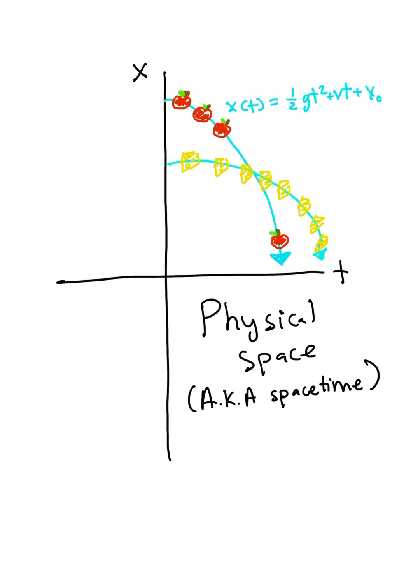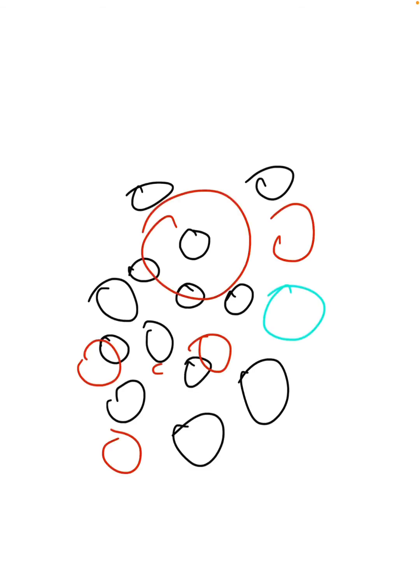However, there are some problems with the physical space formulation. If there are multiple particles in our system, that would mean that there would be multiple forces, and it can be hard to keep track of all the forces in our system. This motivates us to ditch the physical space formulation sometimes, and use what's called a configuration space.